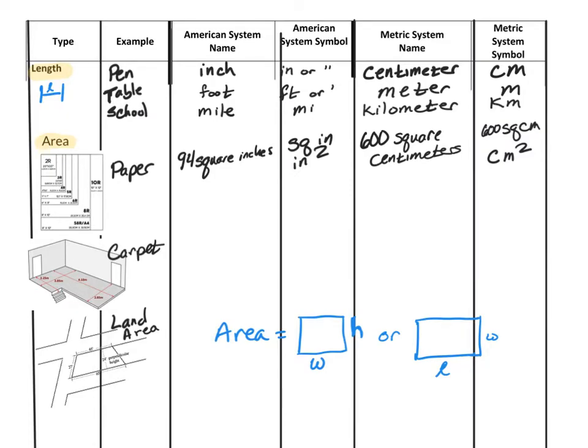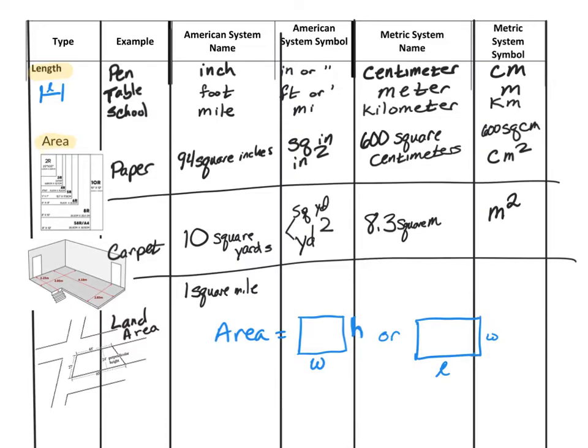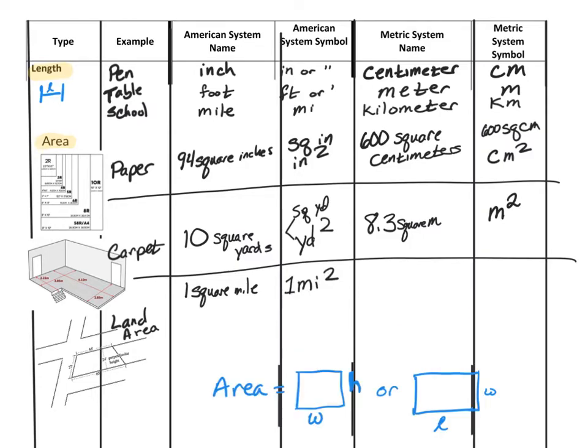If you needed to re-carpet your house, you might want to find out how much carpet you need. You might find that you need 10 square yards of carpet, abbreviated YD squared. In the metric system, that would be about 8.3 square meters, abbreviated M squared. For a piece of land, we might measure it as one square mile, abbreviated MI squared. In the metric system, that's about 2.5 square kilometers or KM squared.